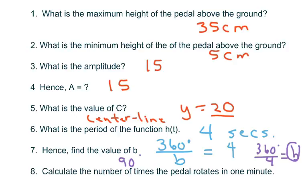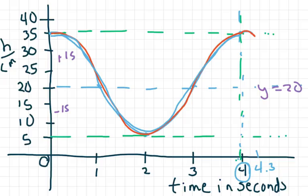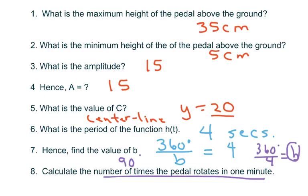To calculate the number of times the pedal rotates in one minute, I know it rotates in one cycle in 4 seconds and there's 60 seconds in a minute. So all I'm going to do is take 60 divided by 4 and that gives me 15.